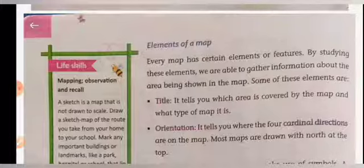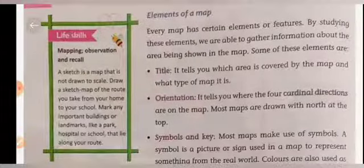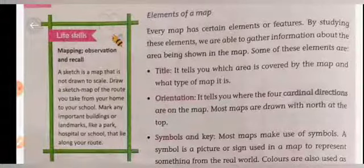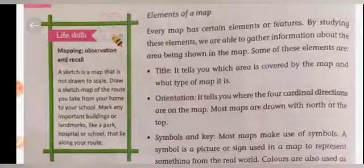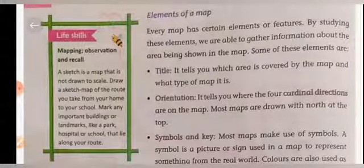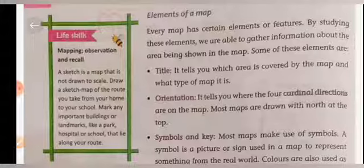The second element is orientation, which means direction. It tells you where the cardinal directions are on the map. Most maps are drawn with north at the top. Every map has four directions, and the top of the map indicates north.